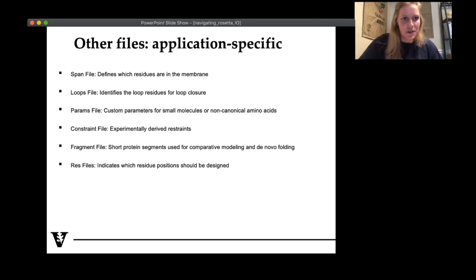So other file types that are more application specific, you're going to be seeing these over the course of the next couple of days. I just put a short list of different common ones. For example, a span file is when you're working with membrane proteins, lets Rosetta know which residues are spanning along the membrane. Params file, I'm a small molecule person. I do drug discovery. So I make a lot of params files. And these are files specifically so Rosetta knows how to read in small molecules that don't already exist in its database.